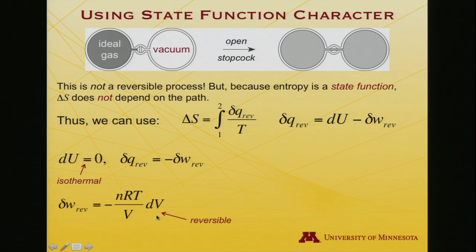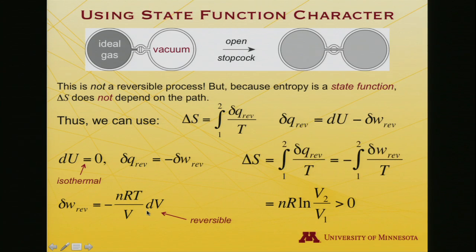We know for an ideal gas what the reversible work is. It's minus nRT over V dV. And so when I go and I plug all that in, I want to know the integral from one to two of del Q rev over T. Well, that's minus the integral from one to two of del W rev over T. Here's my expression. So the T's drop out. When I talk about going from one to two, I'm actually talking about the change in volume. That's what's left in this integral, a dV over V. And I get nR log V2 over V1.